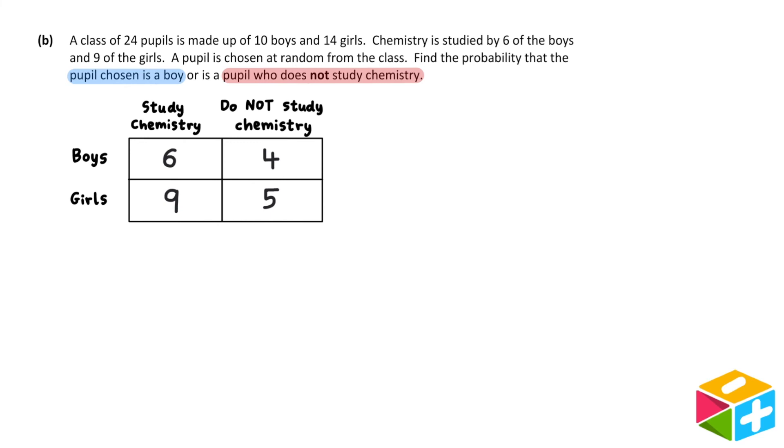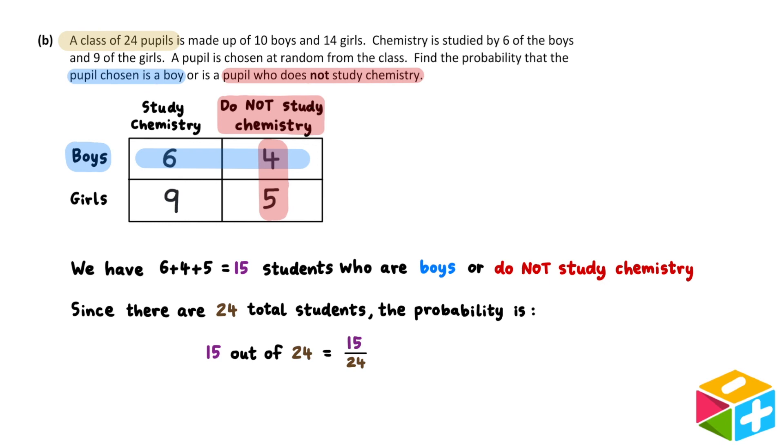We need to find the probability that a randomly chosen pupil is a boy or does not study chemistry. Well, we can use our table to count up how many students are in this category. We'll want to include everyone who is a boy and also everyone who does not study chemistry. In total, we have 6 plus 4 plus 5 is equal to 15 students who are boys or do not study chemistry. We know that the class has 24 pupils in total. 15 of these are boys or do not study chemistry. So the probability we select one of these is 15 out of 24, which written as a fraction is 15 over 24.